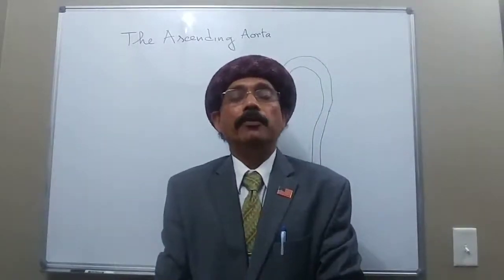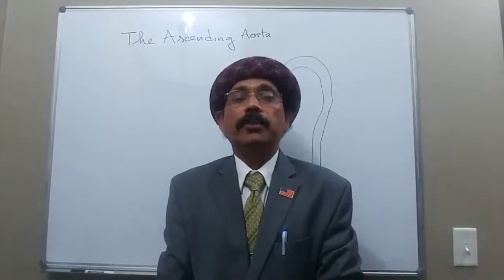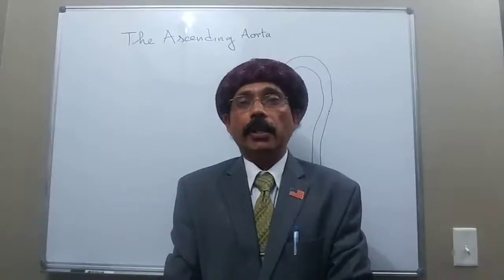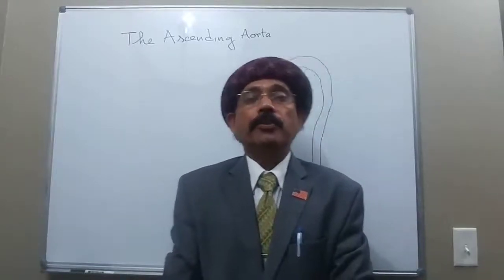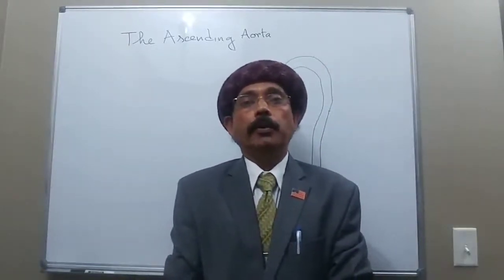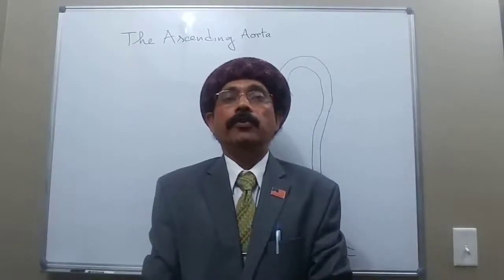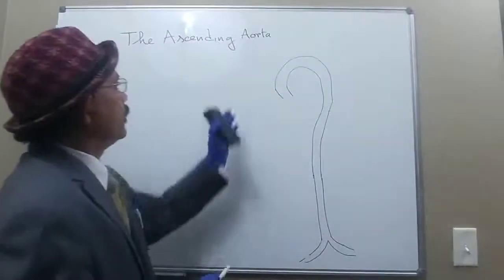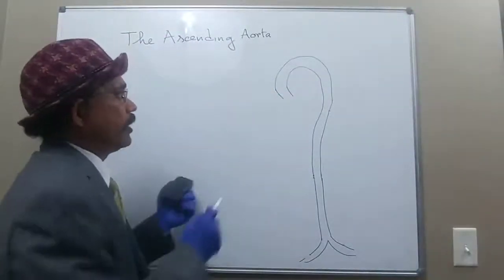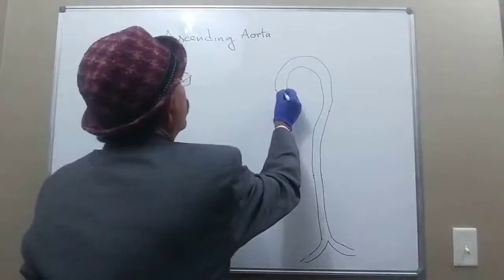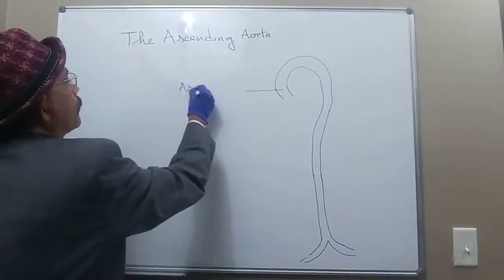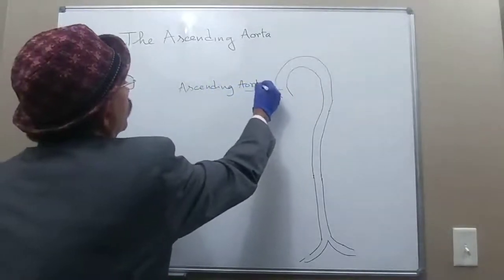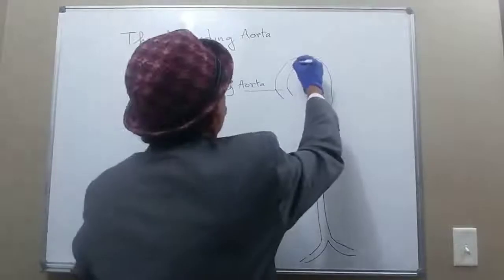Hello, my name is Dr. Diwan S. Raja. Today I will discuss the anatomy of the ascending aorta. The ascending aorta is the initial part of the aorta, which is the major artery in our body. The ascending aorta ascends from the left ventricle, and it continues as the arch of the aorta.